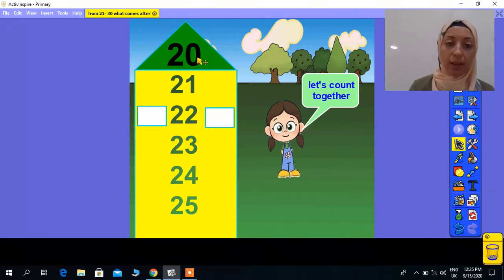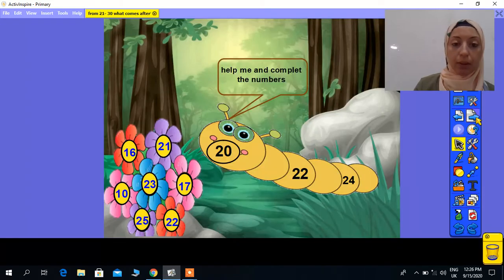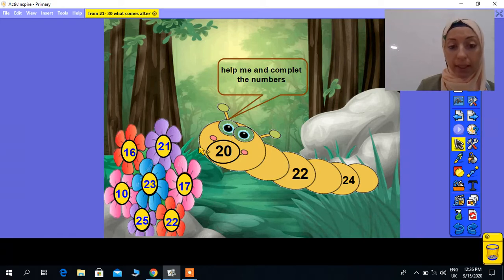If you ask me to put the missing number here, we have number 20, this is 20, and we have also number 22. What do we miss here? What is the number after 20? 21, super.